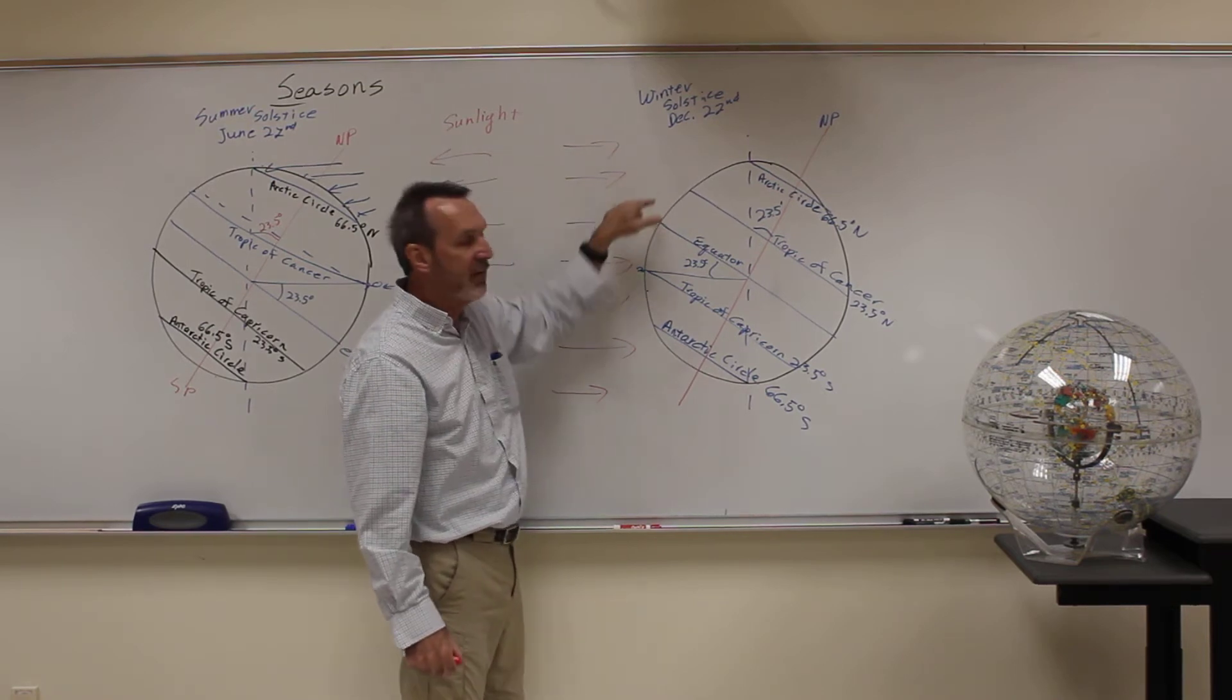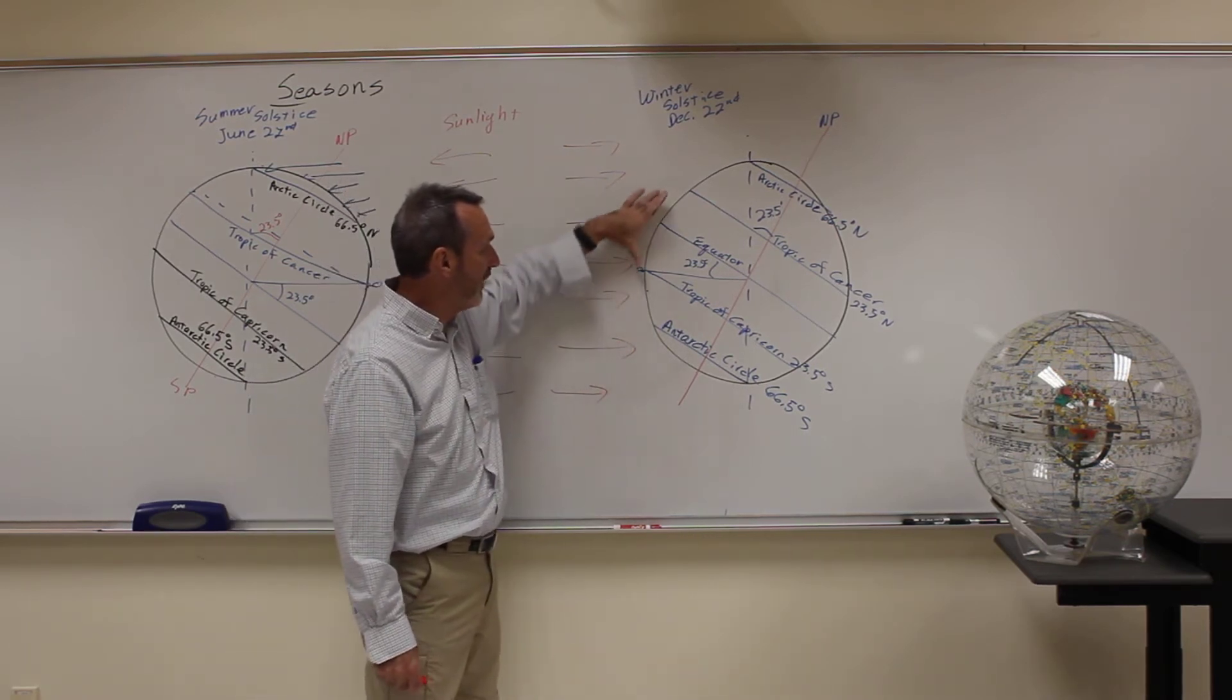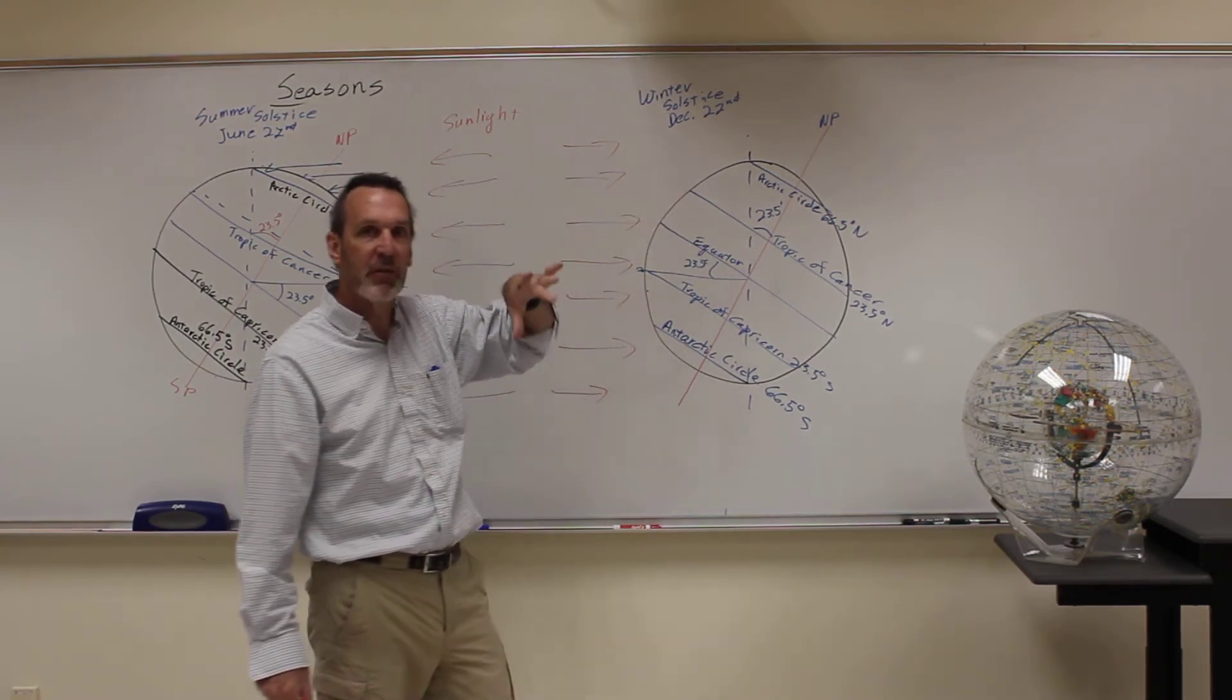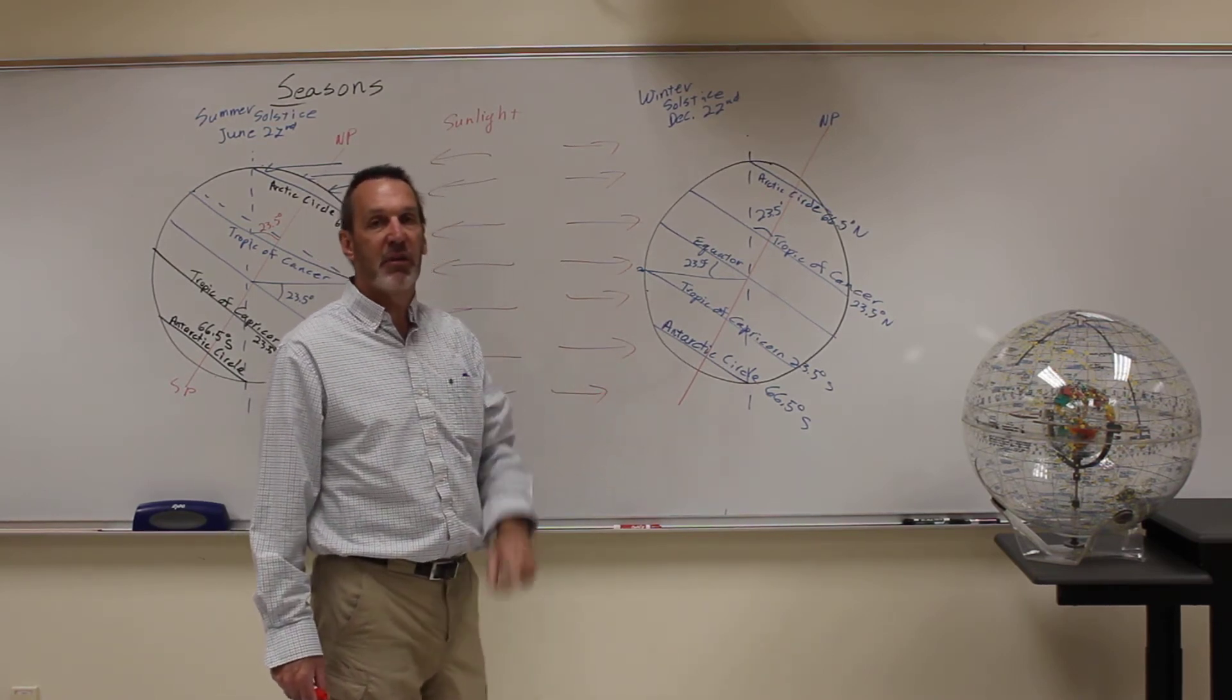so your latitude is less than 23 and a half degrees north, or less than 23 and a half south, so you're in this region of the Earth, then the Sun will get directly overhead, at least twice a year.